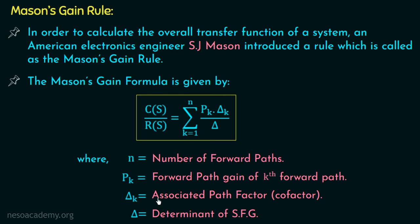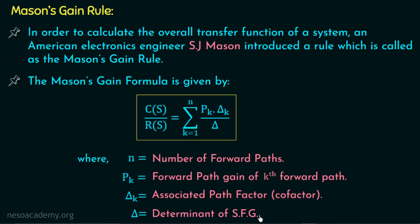Similarly, Δ_k is the associated path factor. If there are two forward paths, then there will be two associated path factors. The associated path factor for the first forward path will be Δ1, for the second forward path it will be Δ2, and Δ is the determinant of the SFG.